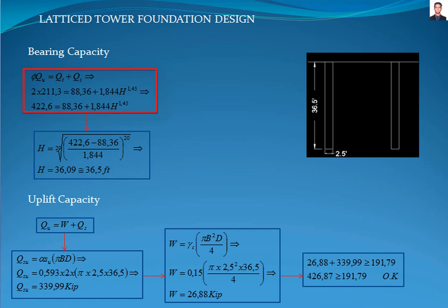Now we proceed to calculate the bearing capacity of the pile with equation 5. The safety factor, according to the Telecommunications Industry Association TIA-222G standard section 9.4, is equal to 2. Q_u is the ultimate compression capacity, Q_t is the tip resistance, and Q_s is the skin resistance, giving this combined equation. Solving for H results in 36.5 feet.